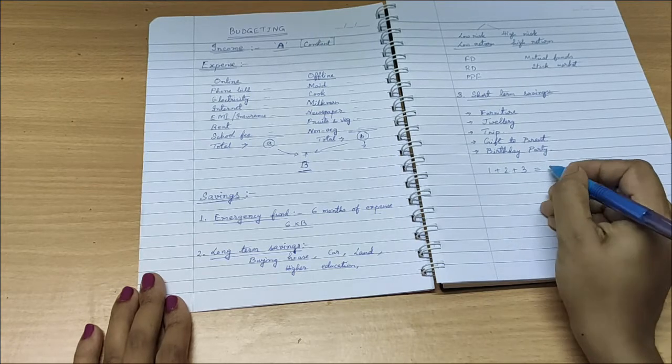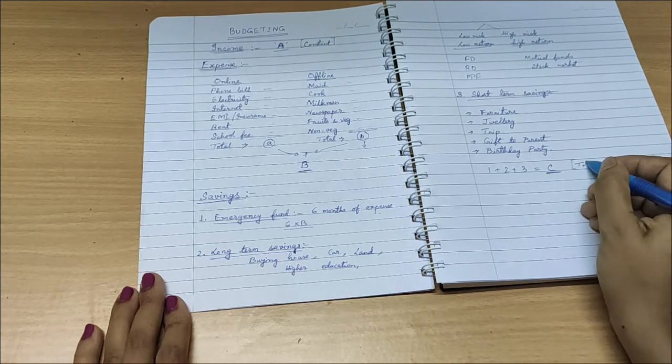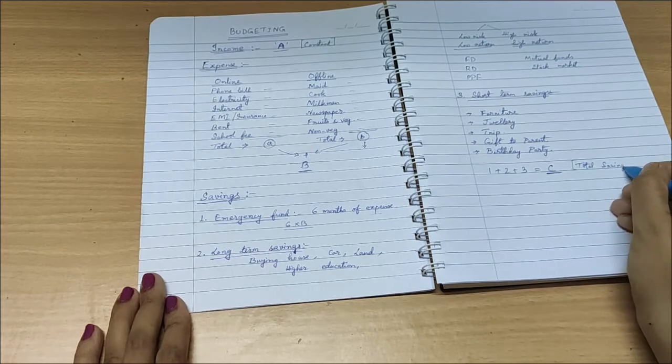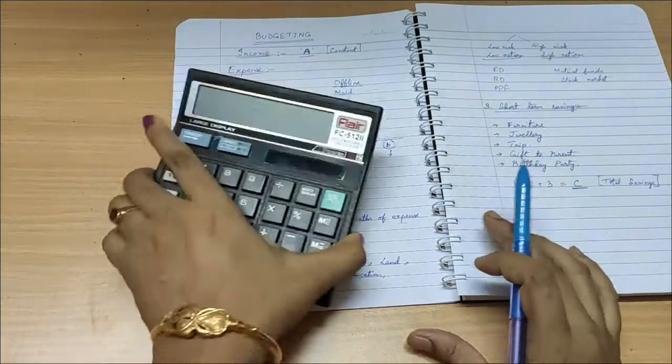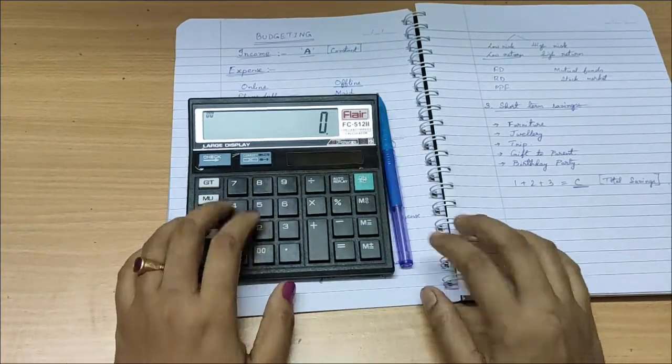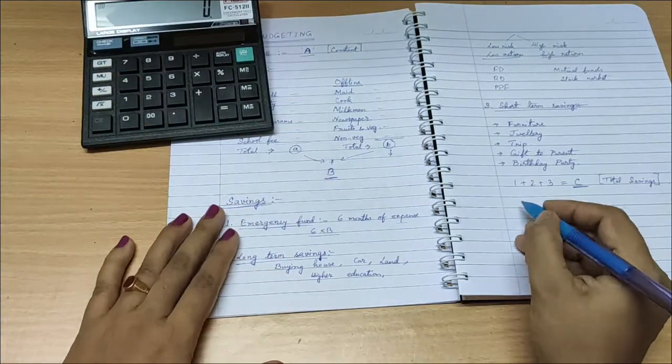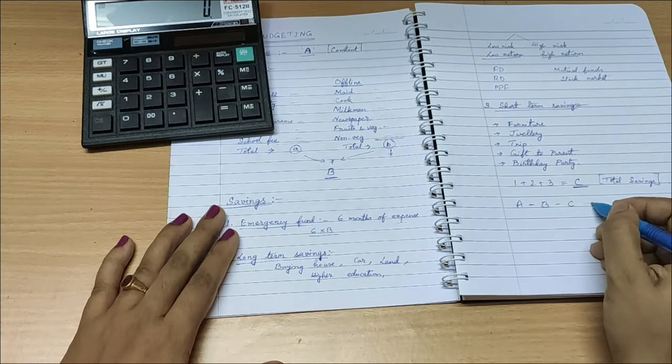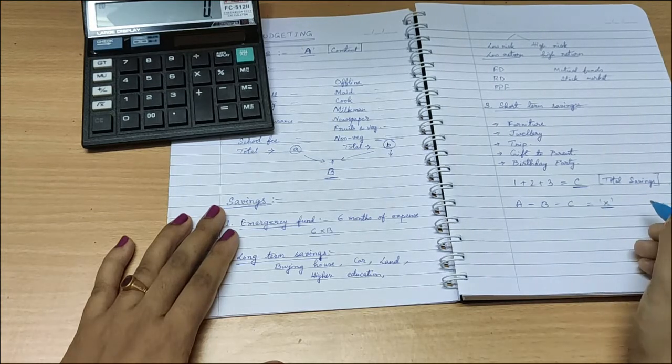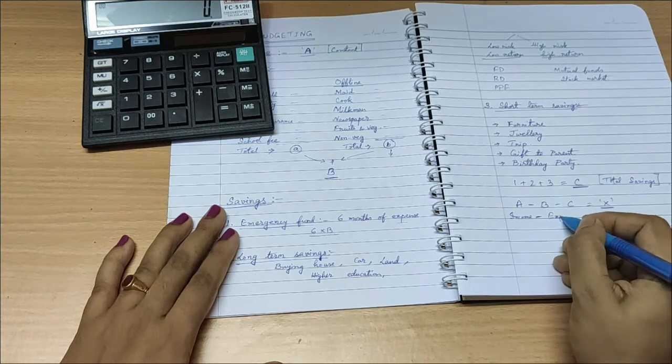Now your income is A, expense is B, and savings is C. So let's do a quick calculation and see what is left with us at the end of the month. So income minus expense minus savings is the sum X, which is the leftover in hand cash with you.